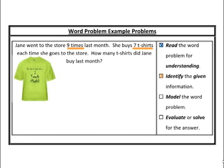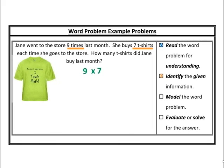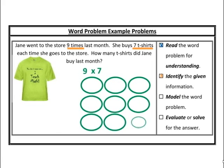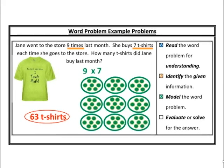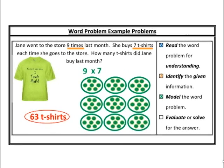I've read, understood, and found the operation: multiplication. Now identify the given information: nine times per month, seven t-shirts each time — nine sets of seven. Now model it. I might write the expression nine times seven. Or if you're a visual learner, draw nine groups with seven in each. Then evaluate: nine times seven equals 63. Always include a unit — look at the question: 'How many t-shirts?' The unit is t-shirts. Jane bought 63 t-shirts last month.